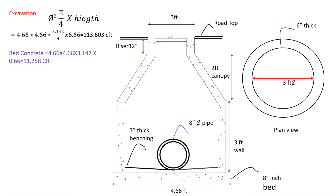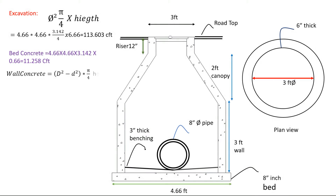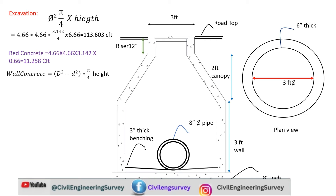Now for bed concrete, we use the same formula: 4.66 squared multiplied by pi value 3.142, multiplied by 8-inch thickness. And now for wall concrete, here is another formula: D-large squared for outer side diameter minus D-small squared for inner side diameter, multiplied by pi divided by 4, then multiplied by height.